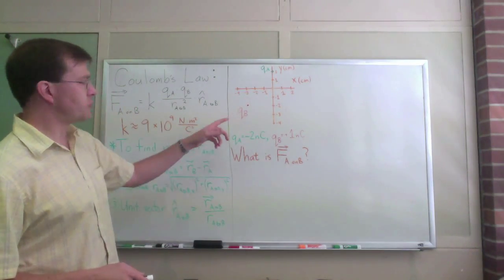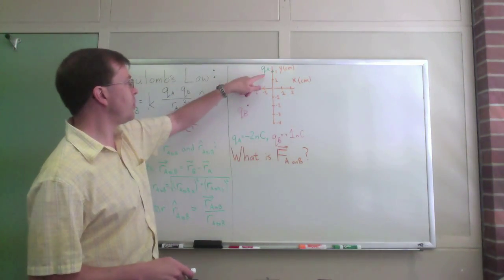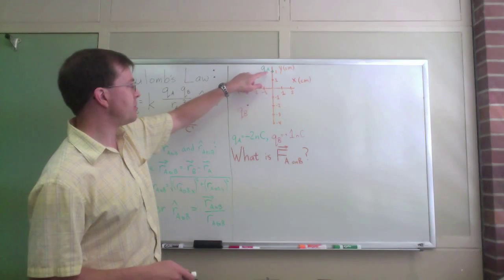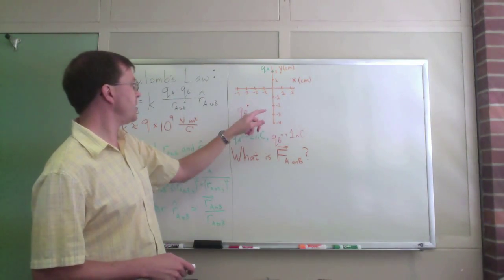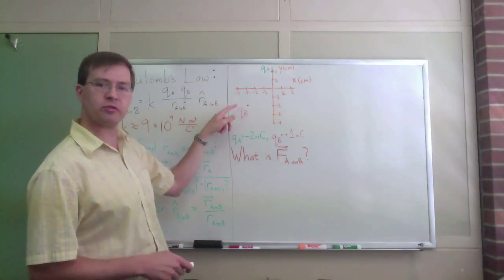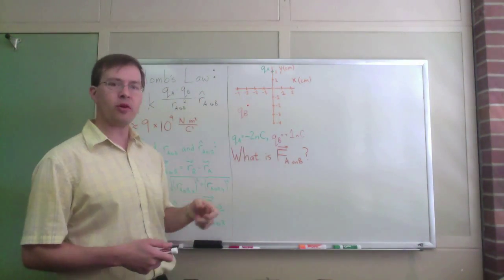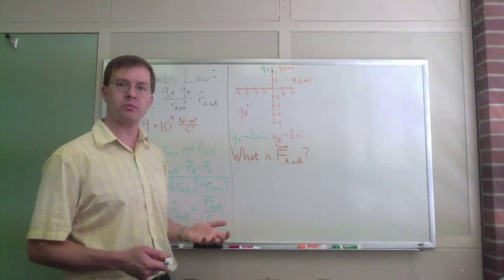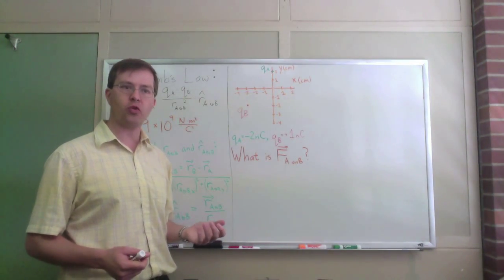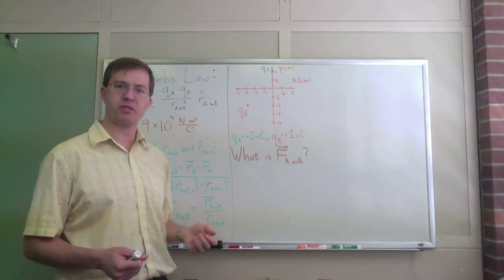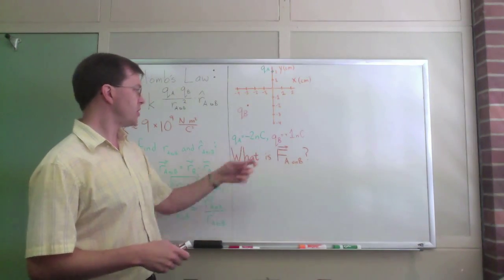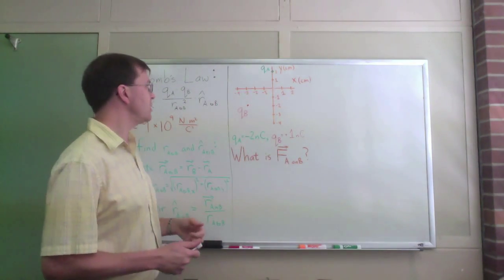Now, in this drawing, I've shown where these charges are. Qa is up here at y equals two centimeters and x equals zero, and Qb is at x equals minus three centimeters, y equals minus two centimeters. So I've got those positions defined. Qa I'm going to say is negative two nanocoulombs of charge. Remember, a nanocoulomb is ten to the minus ninth coulombs. That's a pretty small amount of charge. Qb is plus one nanocoulomb of charge.